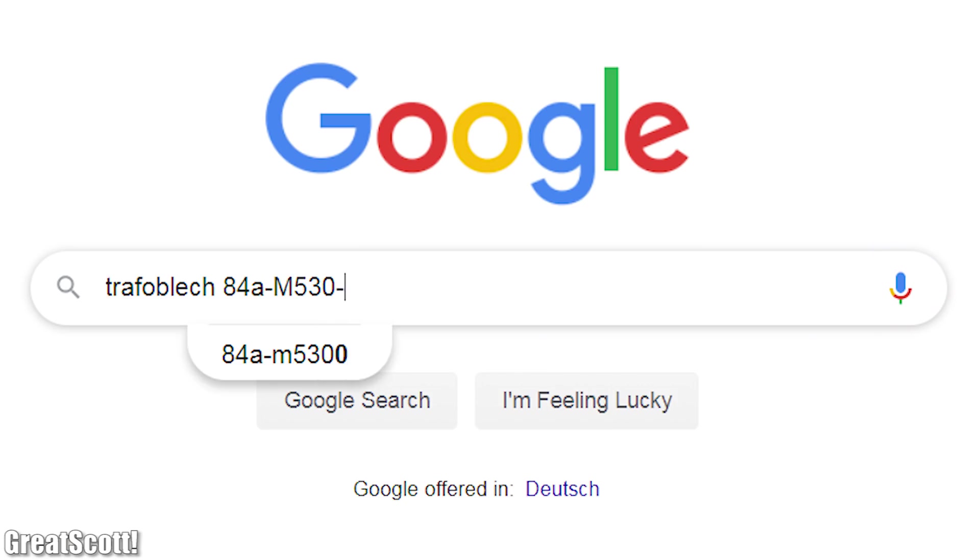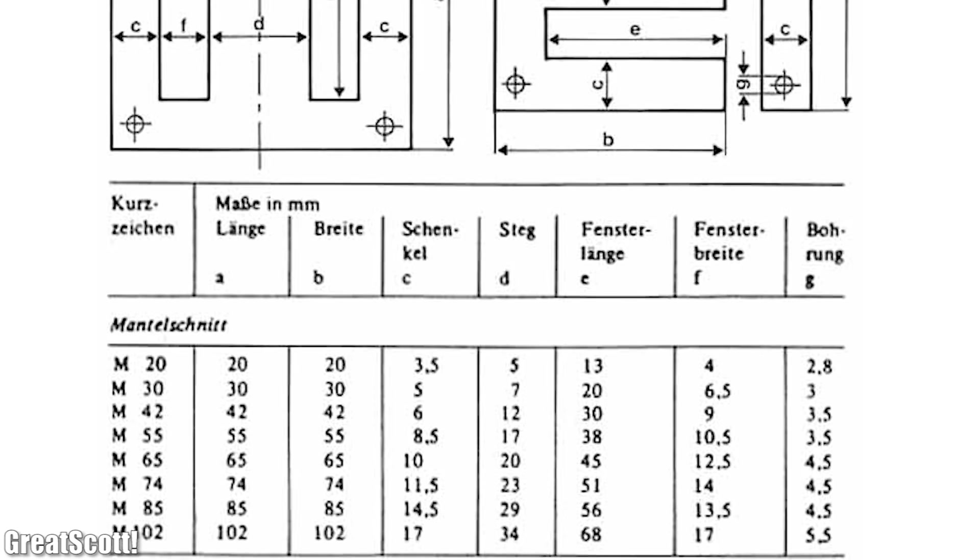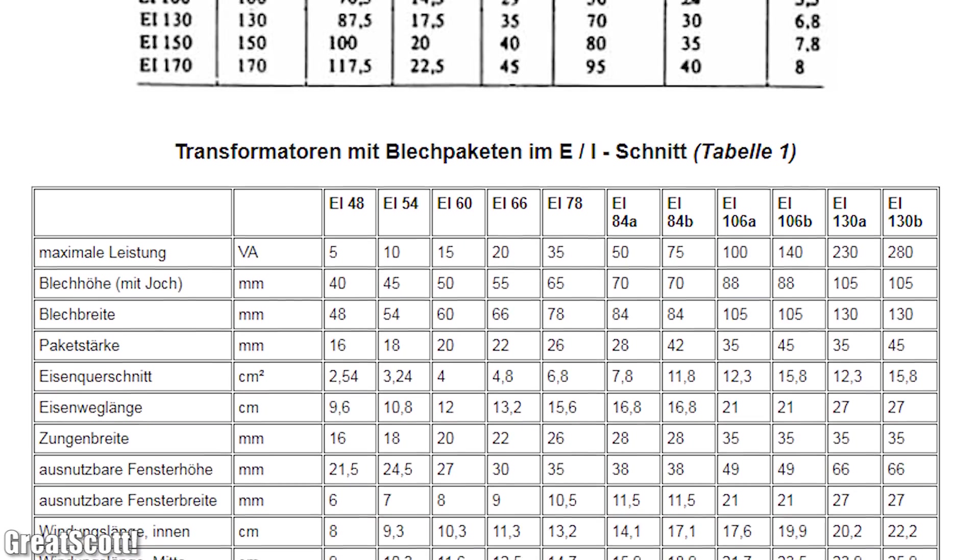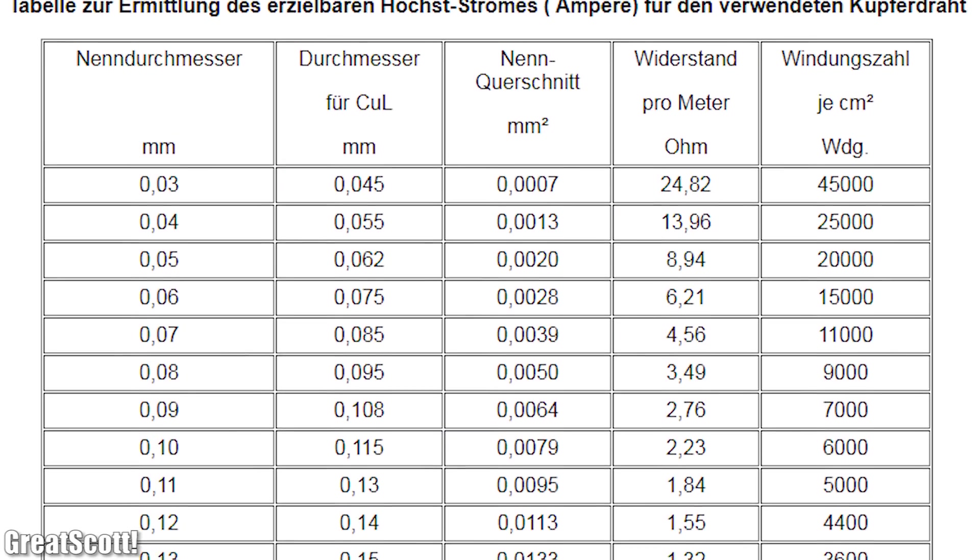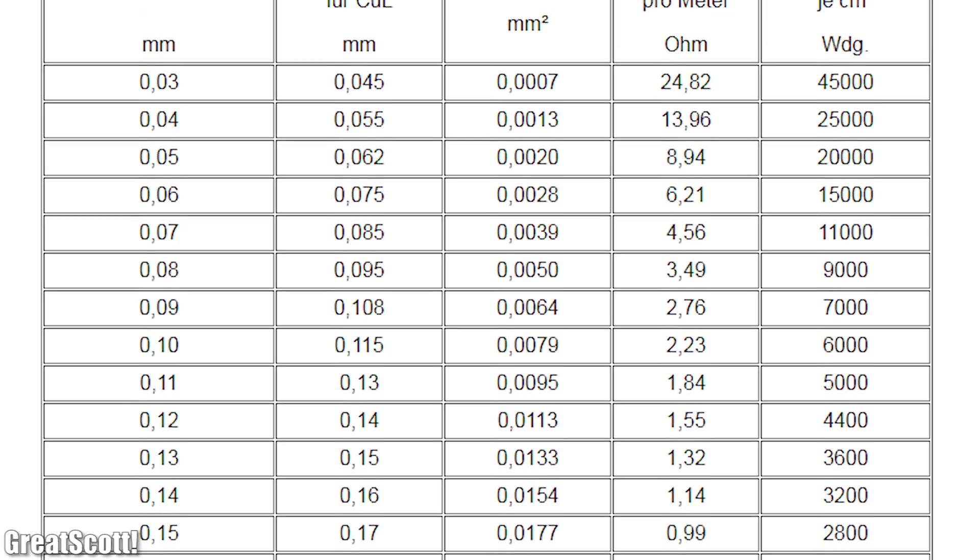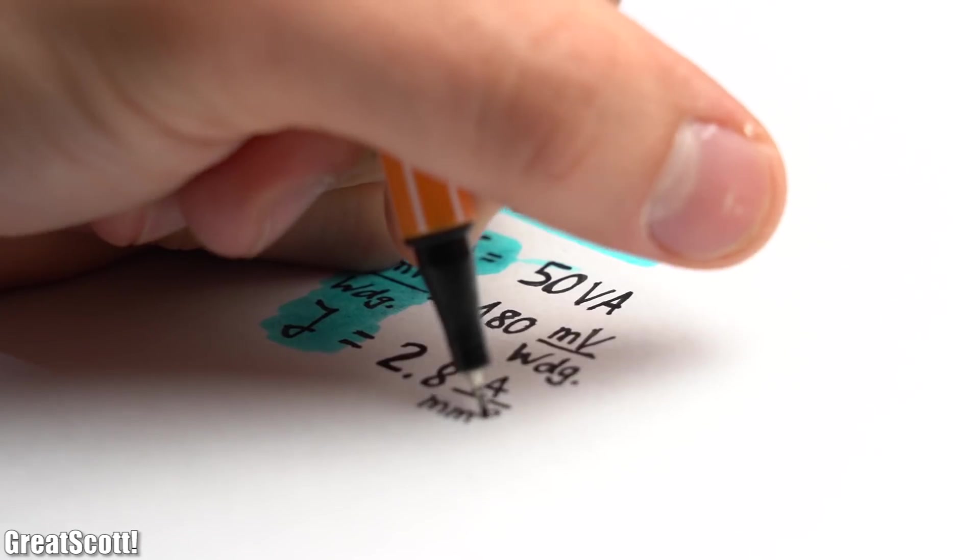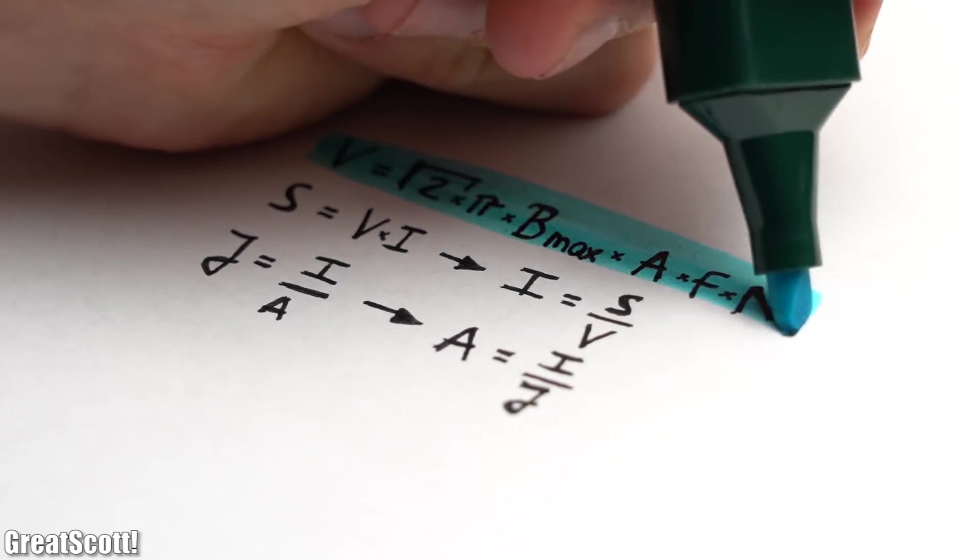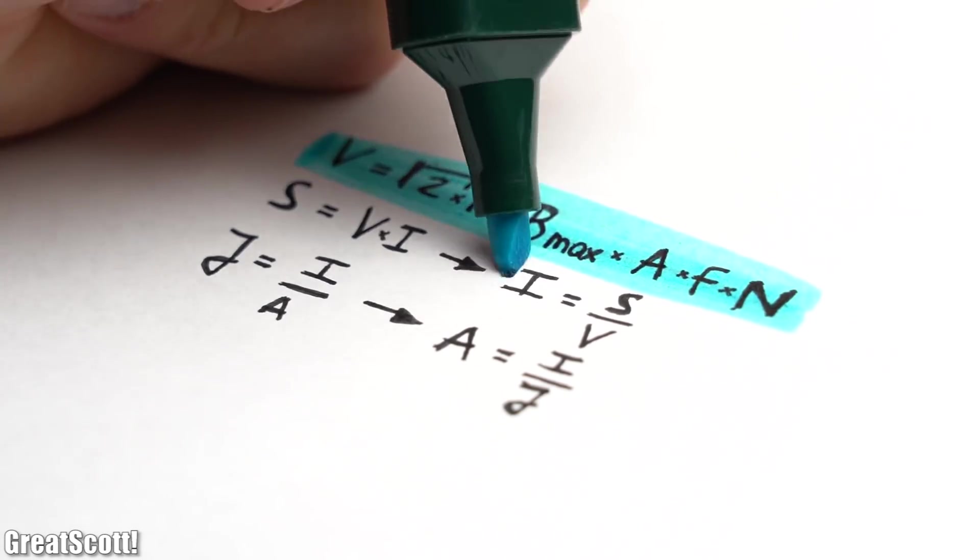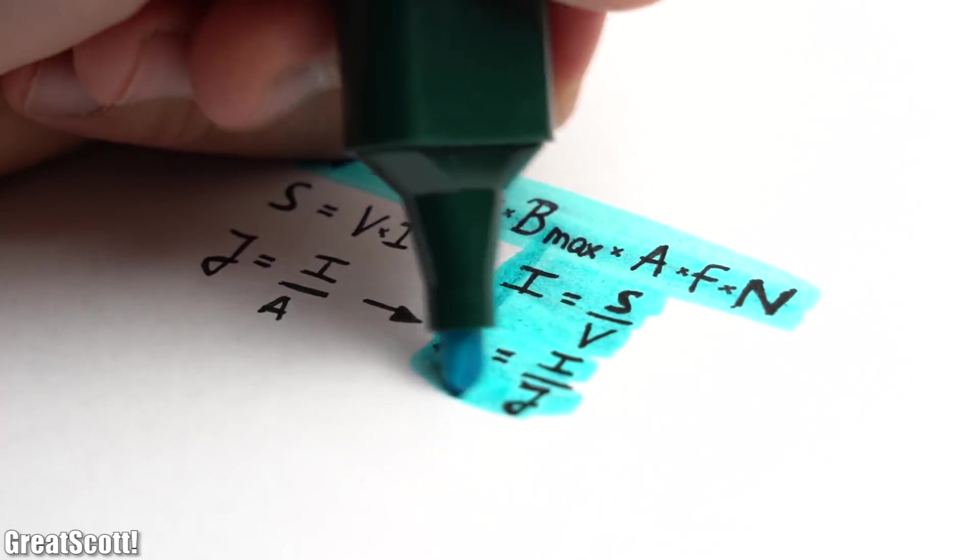Firstly I had to search for the properties of the steel sheets and found this amazing German site where we can not only find all the dimensions of the steel sheets but also all the electrical, mechanical and magnetic values we could ask for. And as a bonus even a table which converts the diameter of enamel copper wire into a cross-section value. So after copying the most important values of my transformer core it was time to boil down all the formulas from the previous transformer video to those few which is all we need for the basic calculations.